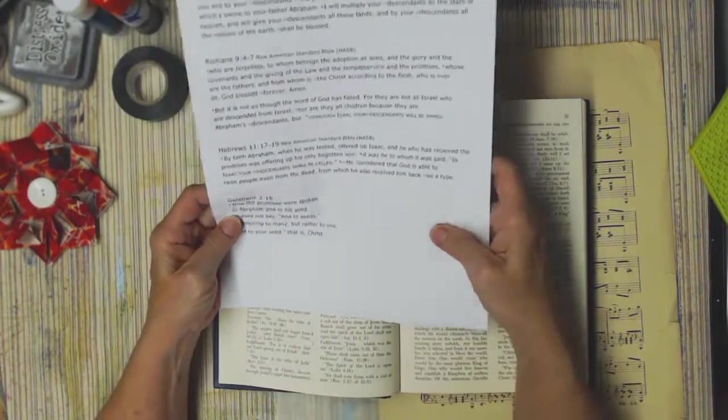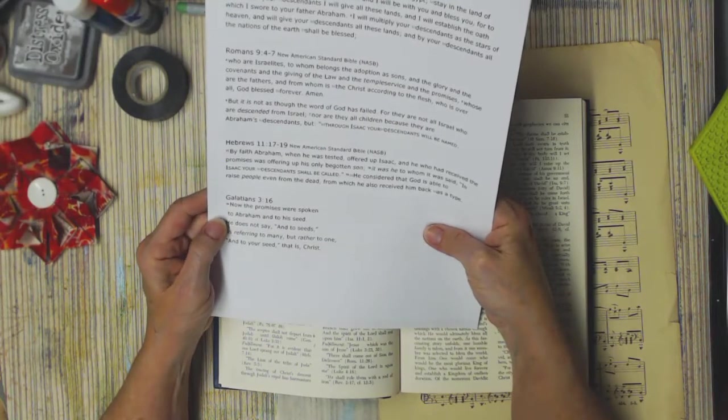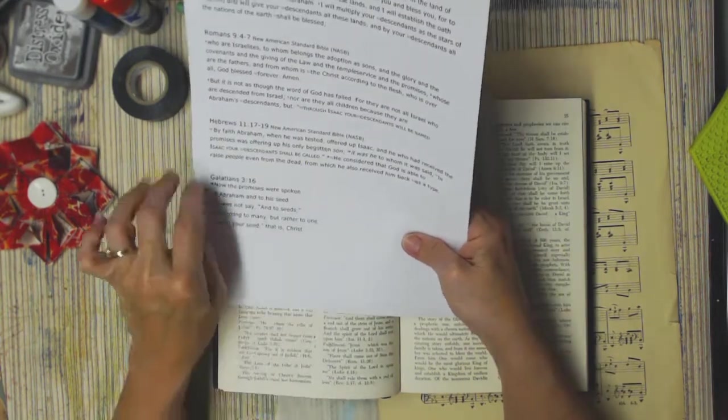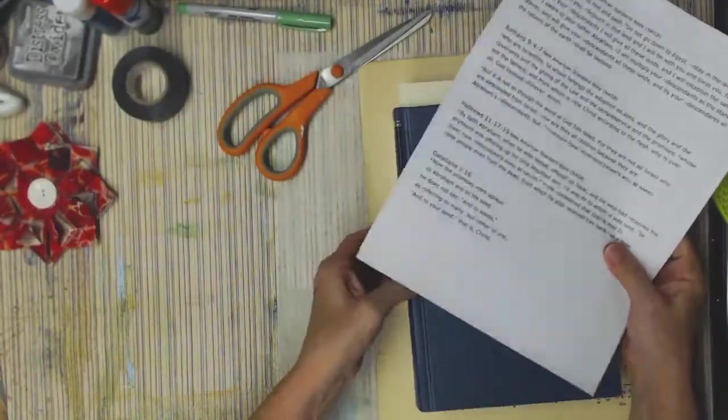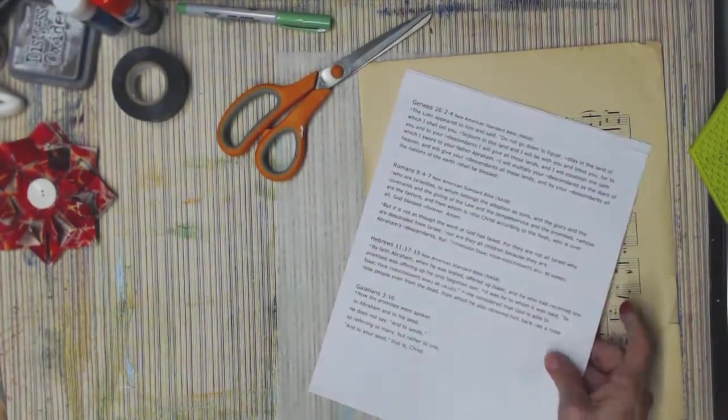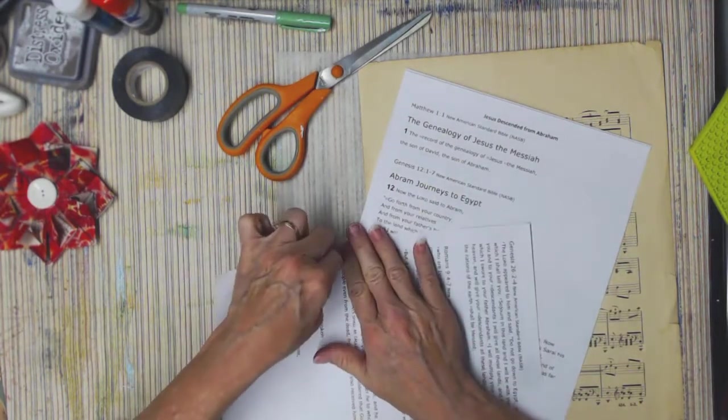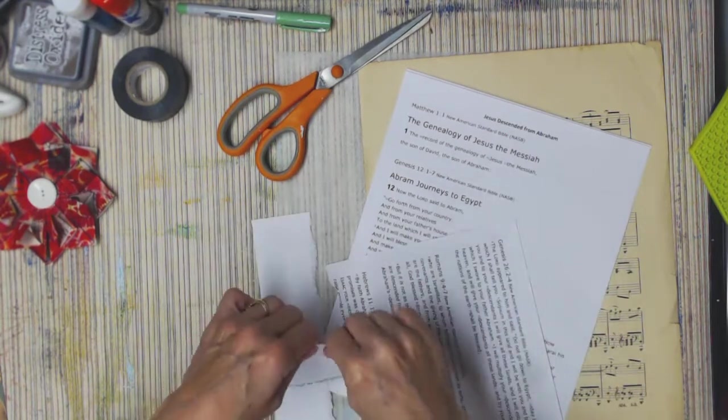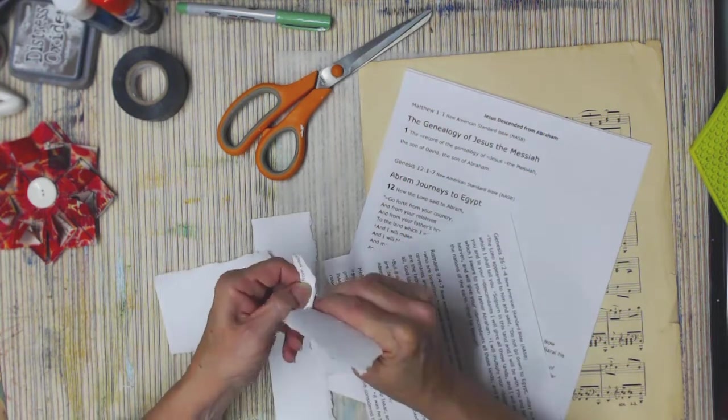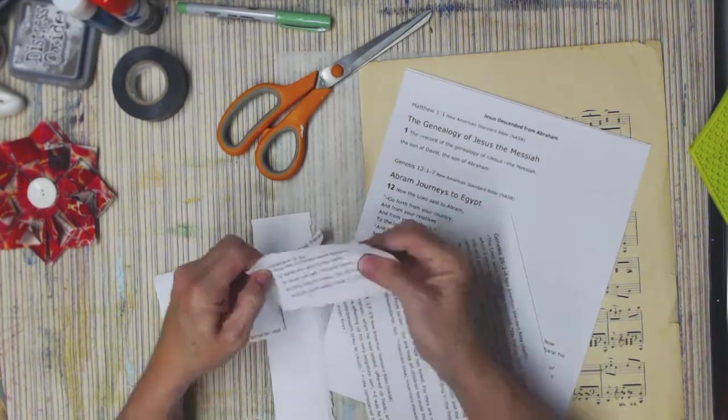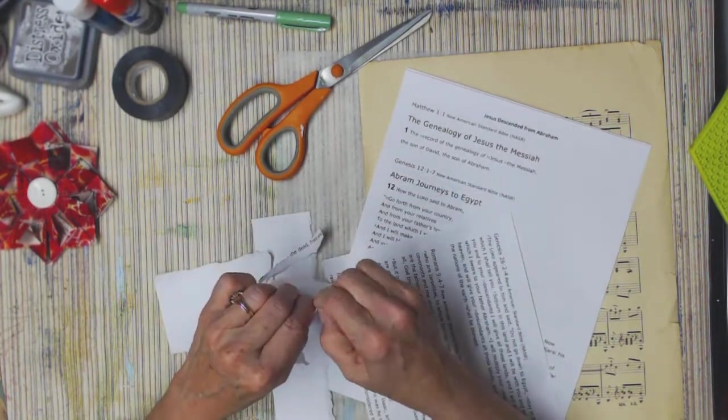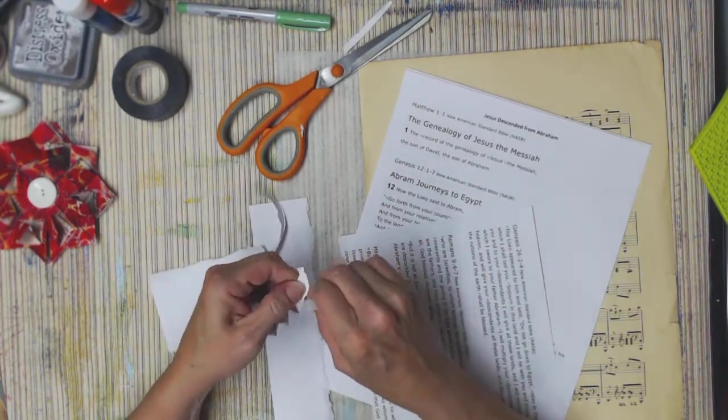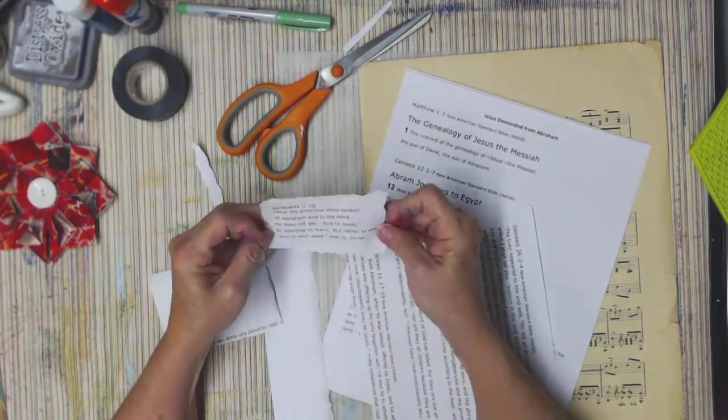And the verse that we're going to put in our Bible study today is Galatians 3:16. Now the promises were spoken to Abraham and to his seed. He does not say, and to seeds, as referring to many, but rather to one, and to your seed, that is Christ. I re-typed this down here so I could cut it out and put it on the page. So, God has very specific intentions about where Jesus is coming from. And, whoops, I kind of got some of it I didn't intend to.